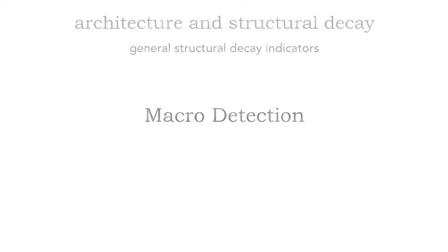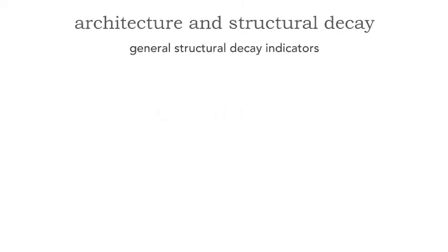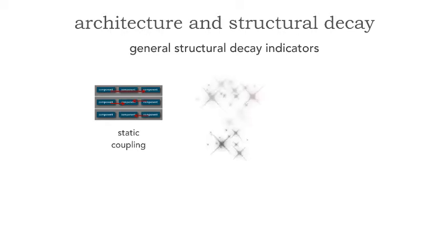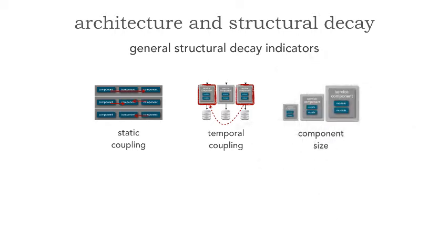So let's take a look at some of these general macro-techniques and macro-detection. For this particular lesson, we're gonna take a look at the general structural decay indicators. These are structural decay indicators that are cracks and seams in those pylons irrespective of what kind of architecture or pattern you're using, whether it be microservices, micro-kernel, space-based, layered, event-driven, or service-based. It doesn't matter at all because all three of these general indicators do apply. And those three indicators are static coupling levels, temporal coupling, and the third is quite simply the component size.